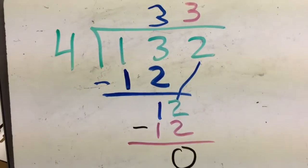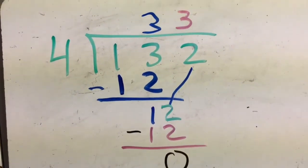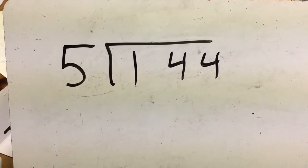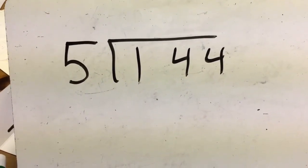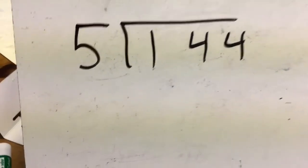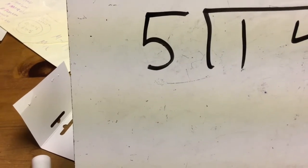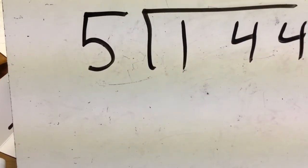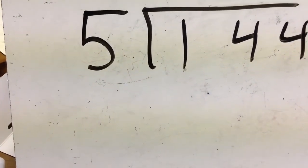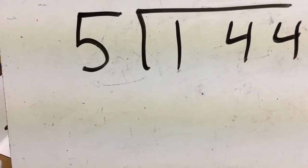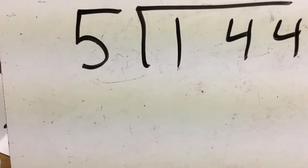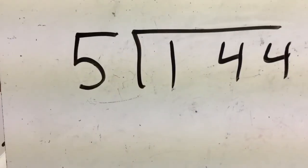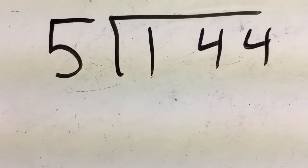We're going to do one more, and this one is going to have a remainder — something left over. That's fine. Every time it's the same question — that's what I mean by there's a pattern. 144 divided by five: first question, how many groups of five can I get out of one, which is in the hundreds place? None. Next thought: how many fives are in fourteen? Five, ten — ten is less than fourteen. Five, ten, fifteen — fifteen is bigger, so my answer has to be two times five, which is ten.